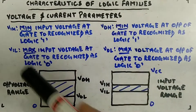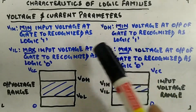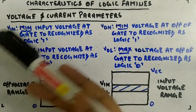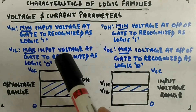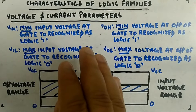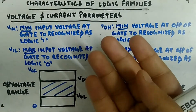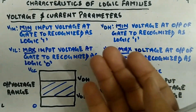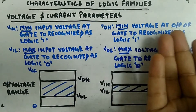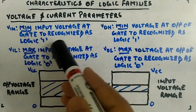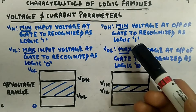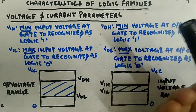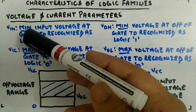The most important part is the minimum/maximum distinction. VIH means minimum input voltage at the gate to be recognized as logic one — the minimum voltage you have to apply at the input of the gate so the gate recognizes a logic one. Similarly, VOH is the minimum voltage at the output of the gate to be recognized as logic one.